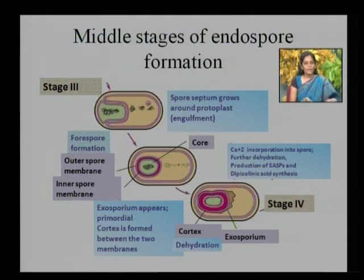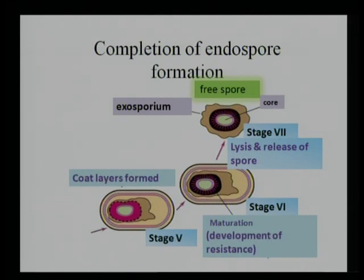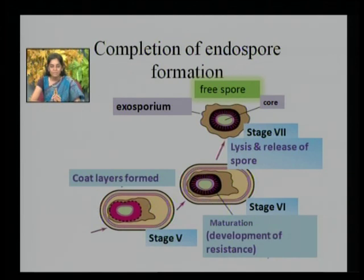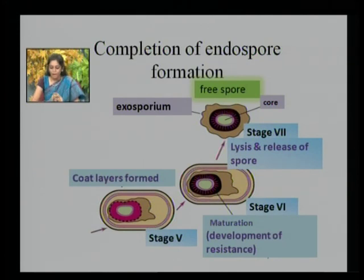In the later stages, a multi-layer spore coat is formed outside the cortex. Once the coat is synthesized, the spore starts attaining maturation, becoming more dehydrated, more refractile, and more resistant in nature. The success of endospore formation lies in the altruistic behavior of the mother cell, which utilizes all its resources to endow the endospore with protective layers, maximizing the chances of survival of the mature spore.